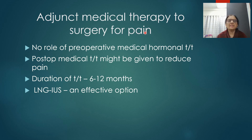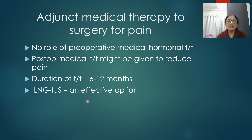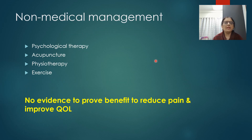Regarding adjunct medical therapy: there is no role for preoperative medical hormonal treatment. In fact, surgery should not be performed when a patient is on or has received hormonal treatment in the previous three months. Postoperative medical treatment is recommended to reduce recurrence and postoperative pain, for 6 to 12 months depending on severity. LNG-IUS is a very good option for patients not desiring pregnancy, effective for five years. Non-medical management such as psychological therapy, acupuncture, physiotherapy, and exercise currently have no evidence-based benefit.